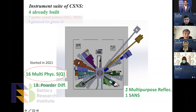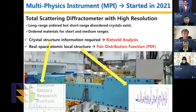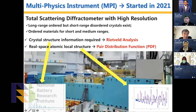This is the instrument suite of CSNS. A high resolution powder diffractometer started in May this year. It is designed for both short and medium range structural studies. Crystal structure information is obtained via Rietveld analysis for precise structure, and real-space atomic structure via pair distribution function analysis — sharp peaks for Rietveld and strong intensity for PDF — are both possible.